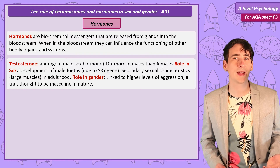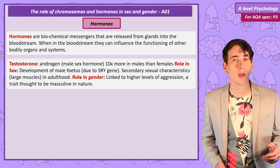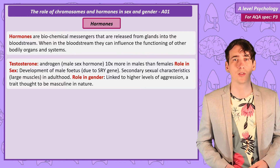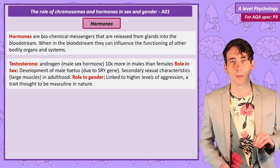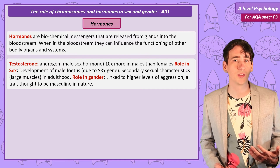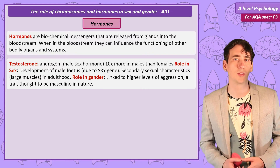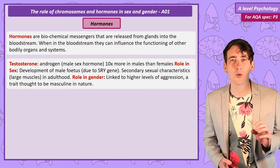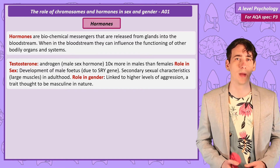Testosterone's role in sex starts early. The SRY gene at around 7 weeks triggers the development of testes and stops the development of ovaries. The developing testes then start to produce testosterone. As males reach puberty, the presence of testosterone is responsible for secondary sexual characteristics like larger muscles in adult males. As for testosterone's role in gender, it's thought to be linked to the increased levels of aggression and competitive behaviour in males.